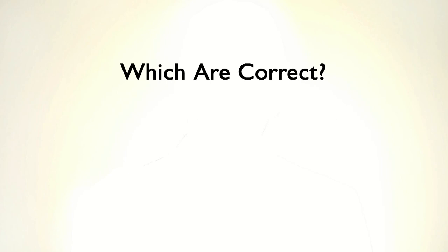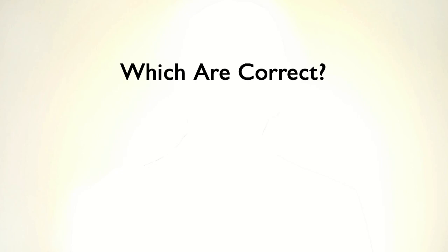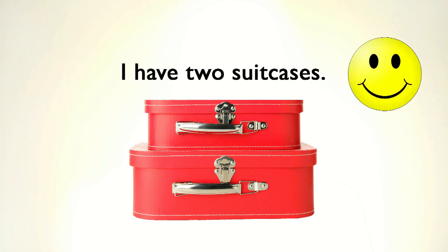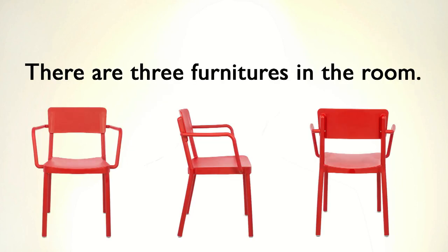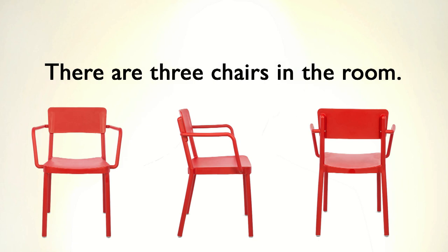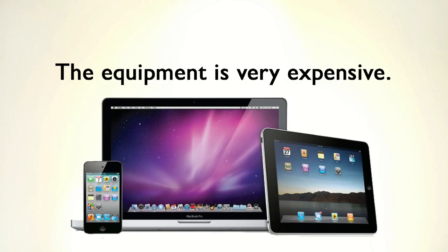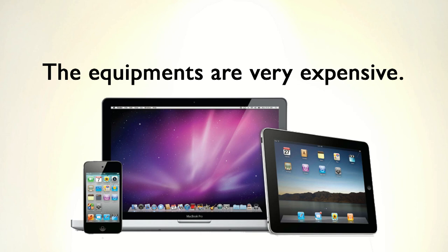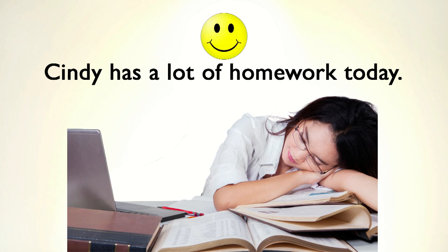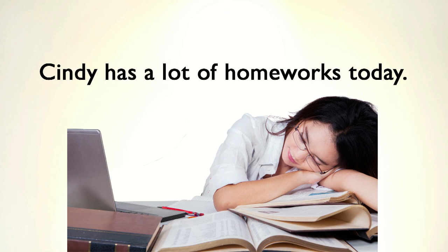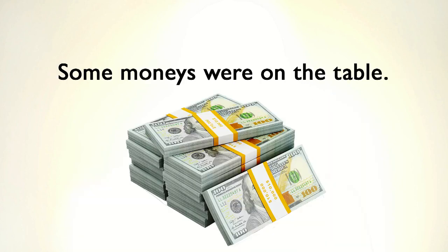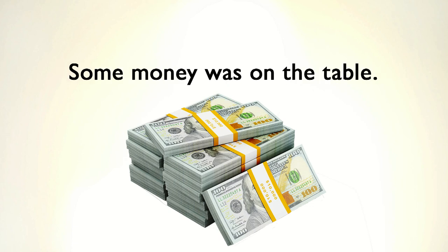Which of the following sentences are correct? Which are incorrect? I have two luggages. / I have two suitcases. There are three furnitures in the room. / There are three chairs in the room. The equipment is very expensive. Cindy has a lot of homework today. / Cindy has a lot of homeworks today. Some monies were on the table. / Some money was on the table.